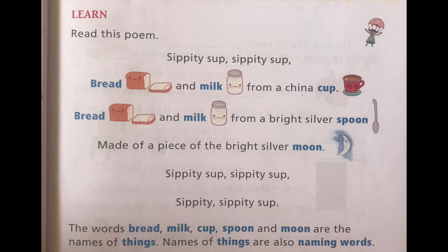In this poem, the words written in blue color — that is bread, milk, cup, spoon, moon — all these are what? Names of things. And these names of things are also called naming words. I hope you got that.